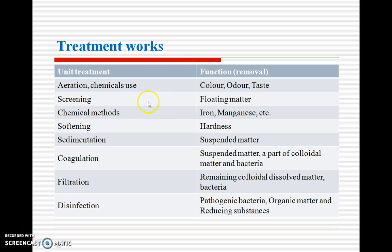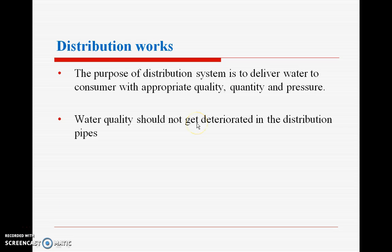In the treatment works, the units include aeration, screening, chemical treatment, softening, sedimentation, coagulation, filtration, and disinfection — these are the processes to remove impurities. For the distribution works, the purpose of the distribution system is to deliver water to the consumers with appropriate quality, quantity, and pressure. Water quality should not get deteriorated in the distribution pipes.